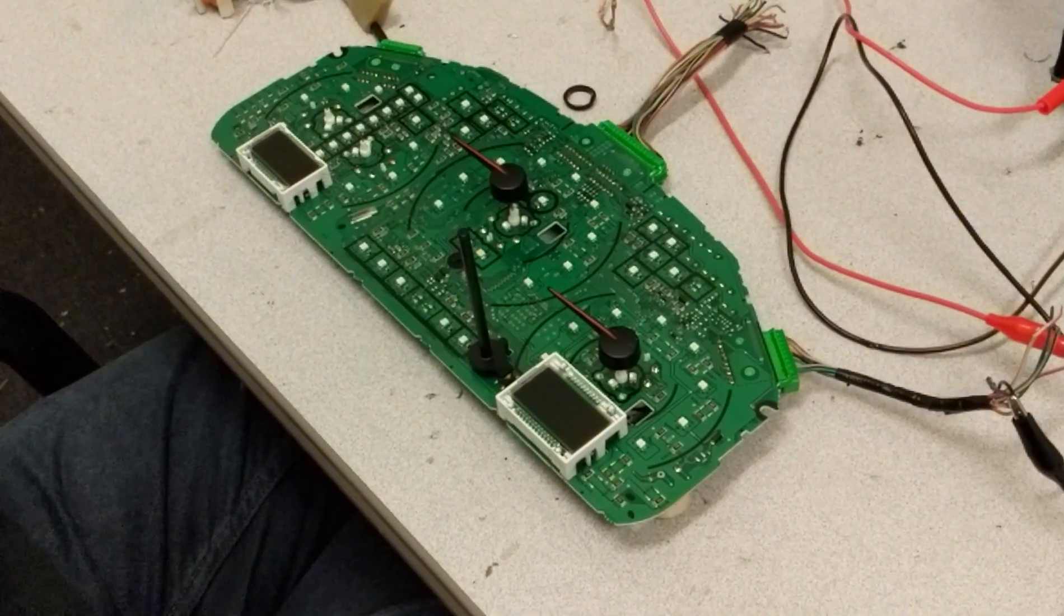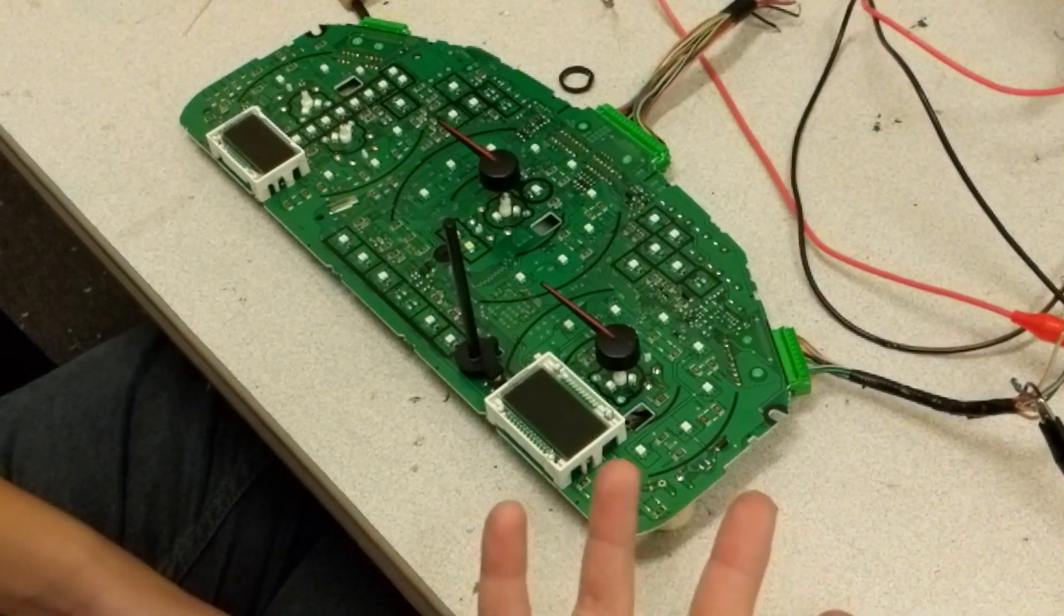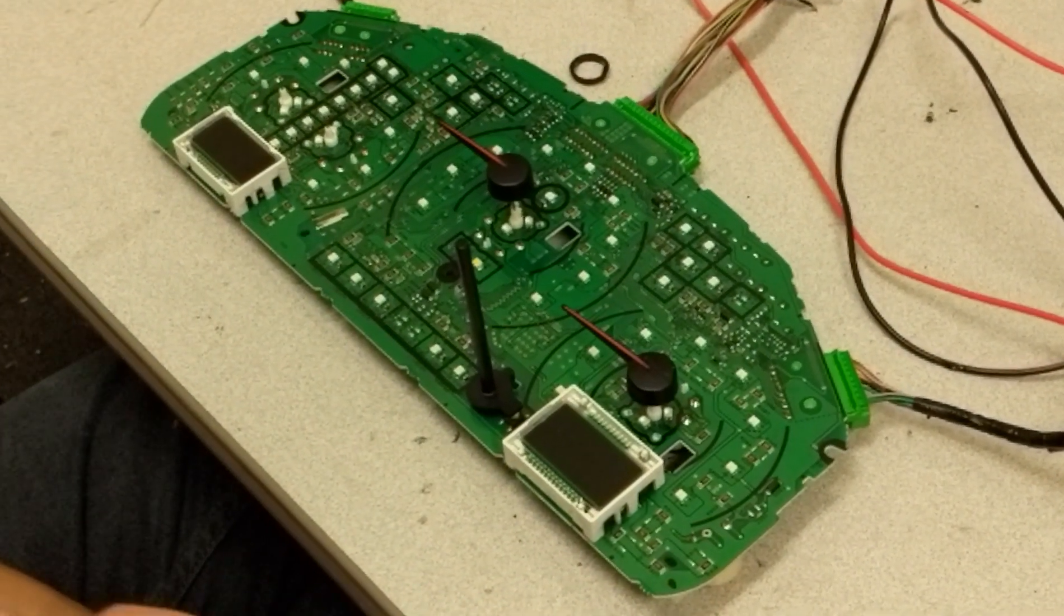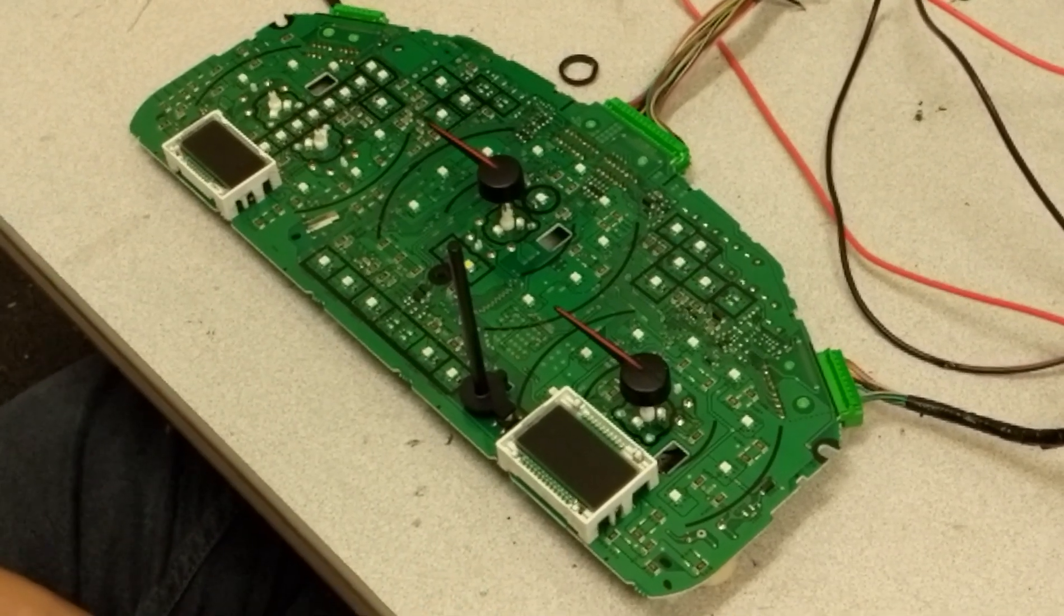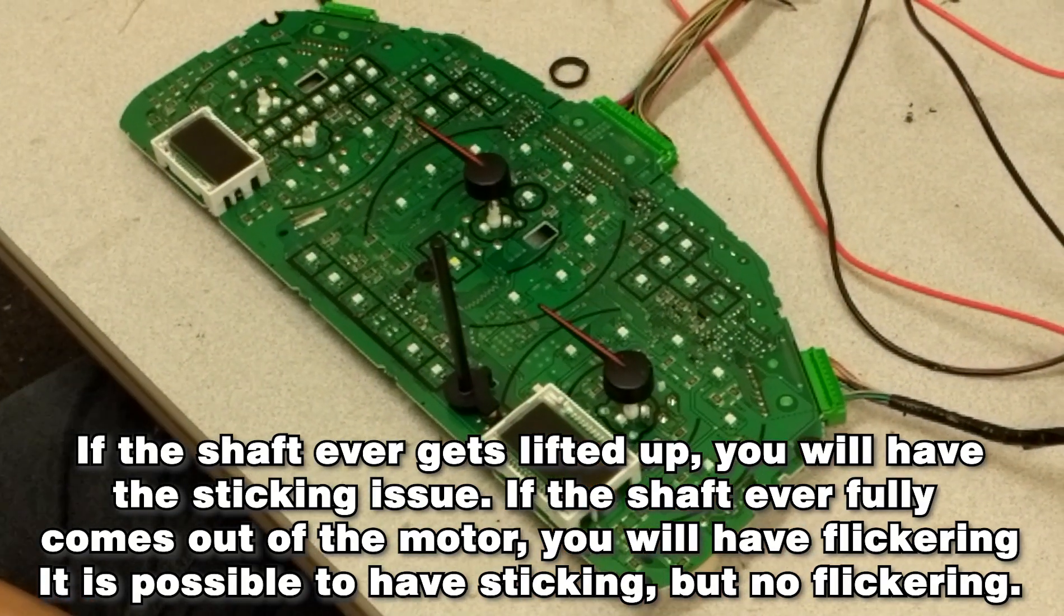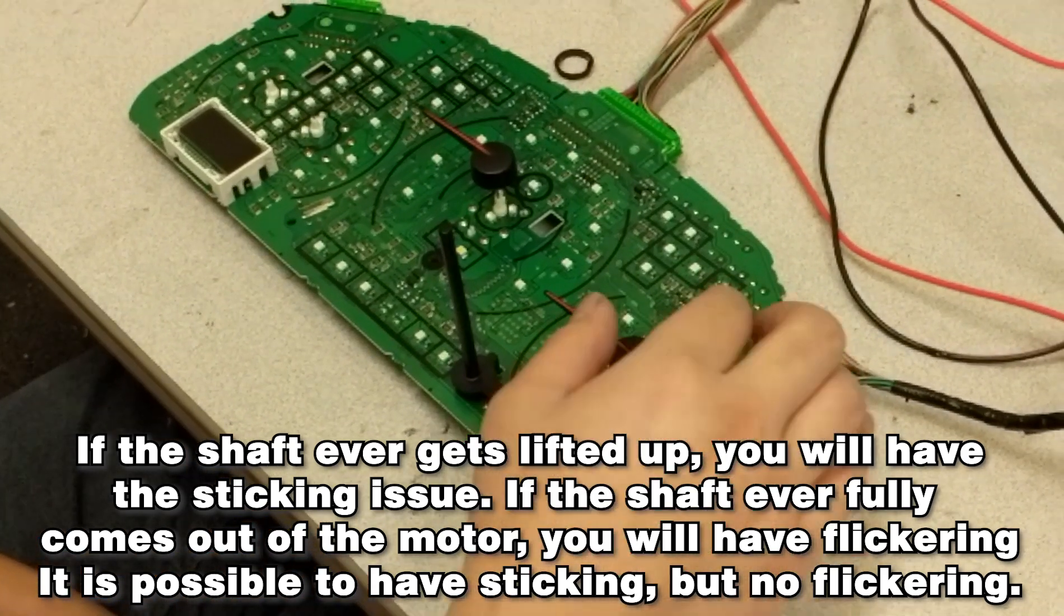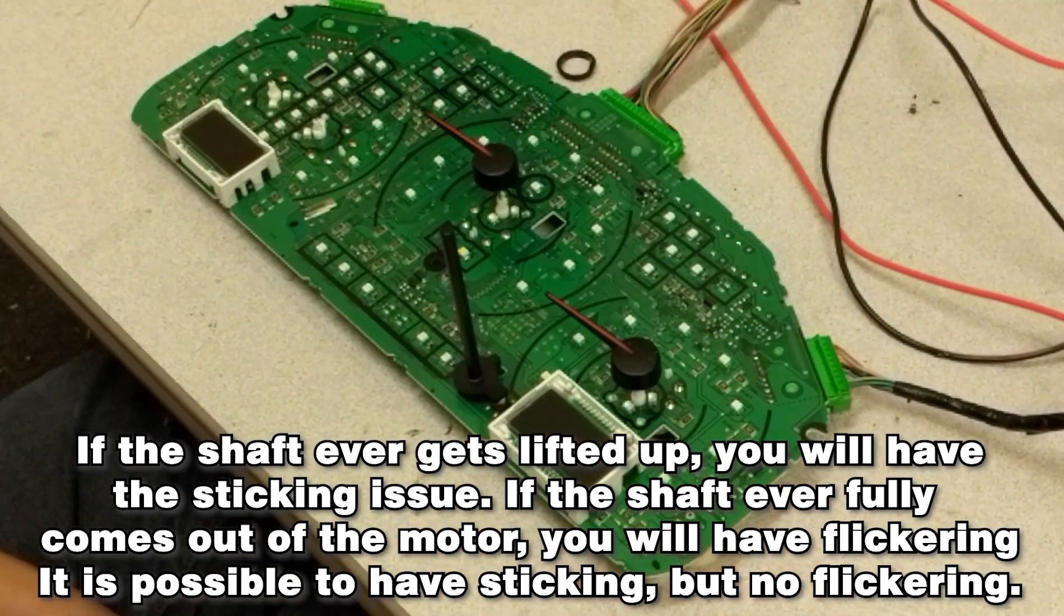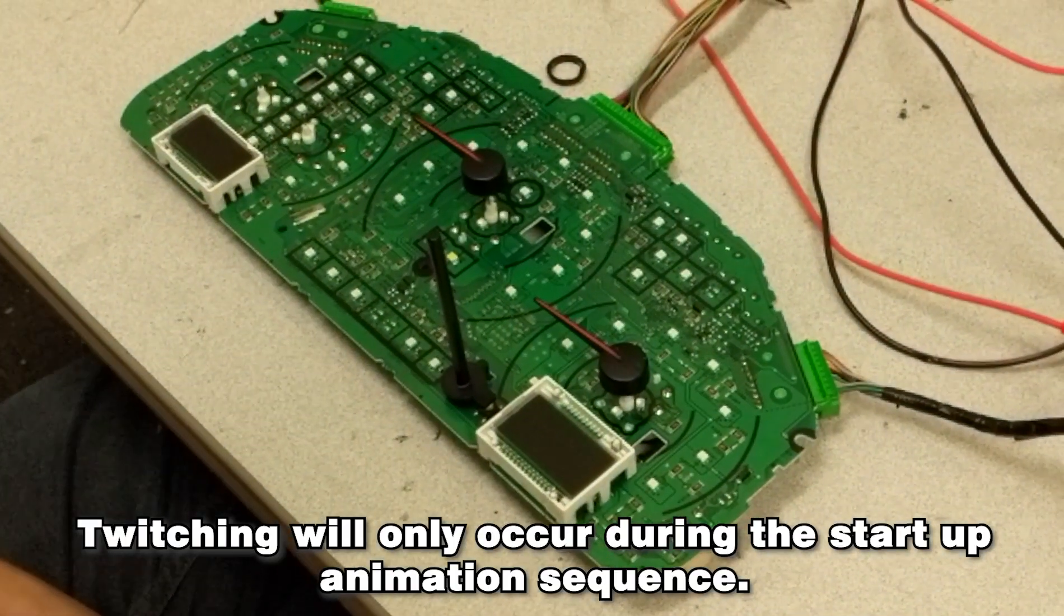So I'm going to show you basically what the two kind of issues that these motors can have. One is going to be the sticking, and the other one is going to be the twitching. So to diagnose which issue you have, it really boils down to how the install came apart. If you have the needle come out, or the shaft start pulling out, but you manage to grab it before it fully came out, and then you remove the needle, you'll always have the sticking issue. The sticking issue will happen whenever the shaft ever starts coming up. And then the twitching issue is if your shaft always did manage to come all the way out, then you'll also have the flickering issue as well.